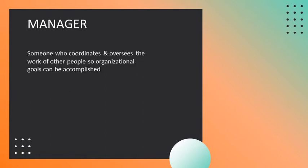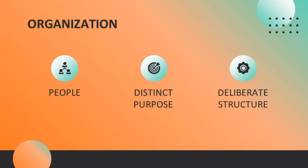Who is a manager? It is someone who coordinates and oversees the work of other people so organizational goals can be accomplished. Any organization has three common characteristics: first, it is composed of people; second, it has a distinct purpose or goal; third, it has a deliberate structure. So an organization is a deliberate arrangement of people to accomplish some specific purpose that individuals independently could not complete alone.